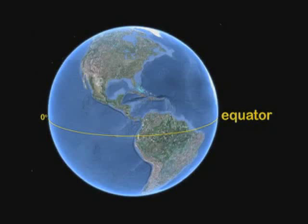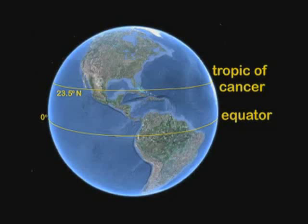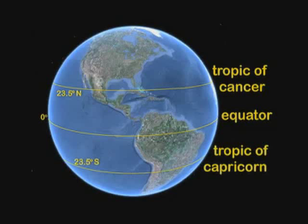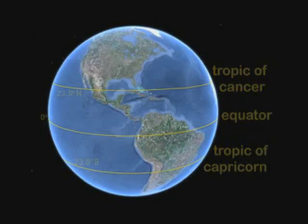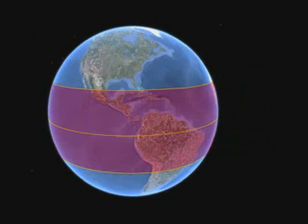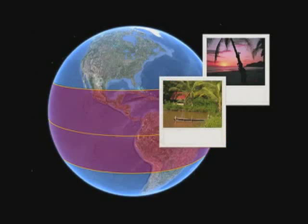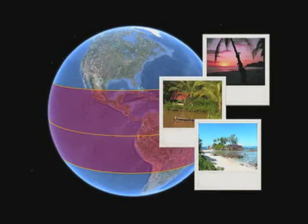There are several other unique lines of latitude. The Tropic of Cancer lies at 23 and a half degrees north, and the Tropic of Capricorn lies at 23 and a half degrees south. The part of the Earth that lies between these lines is called the tropics. It's known for its hot temperatures, heavy rainfall and dense jungle.